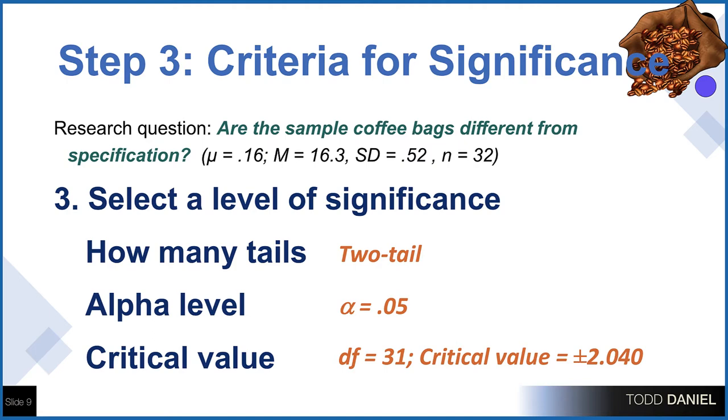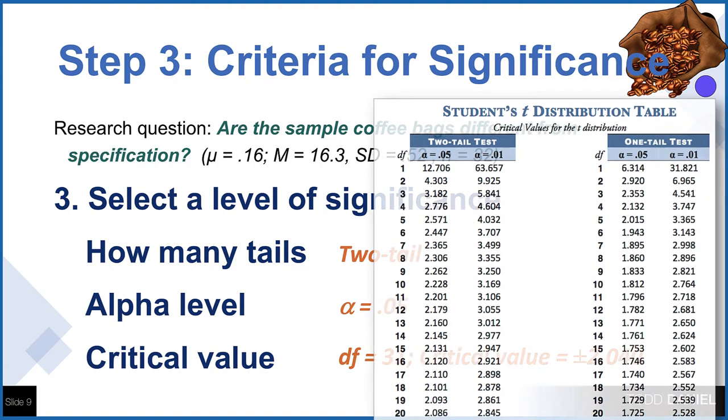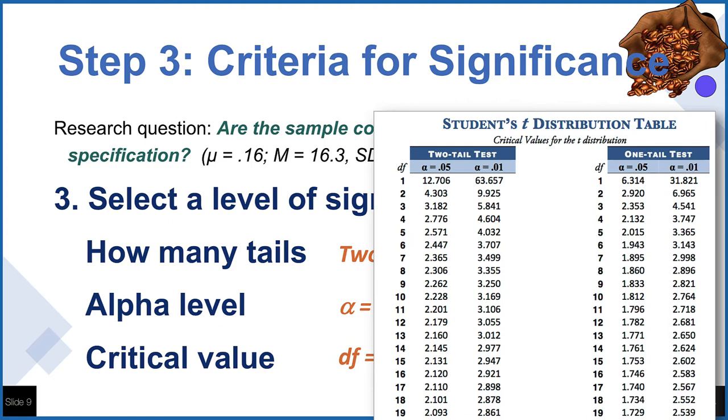Where do you find student's t distribution table? You could look in your textbook. There's probably one in a stats textbook. You could look one up online, or if you're enrolled in my class, you will have student's t distribution table provided for you.